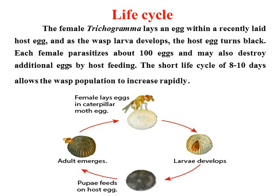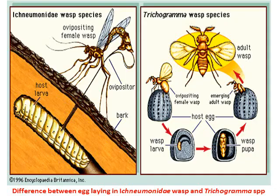This picture shows a female laying eggs in the caterpillar moth egg by drilling its chorion. The larvae of Trichogramma develop inside the egg and the egg turns to a blackish color. The adult then emerges out, and the life cycle is completed within 8 to 10 days.